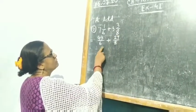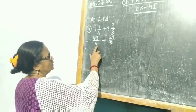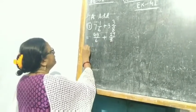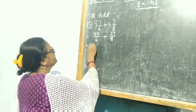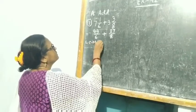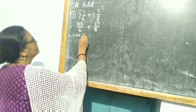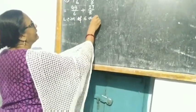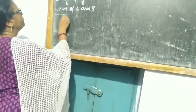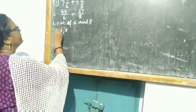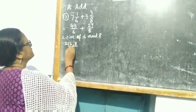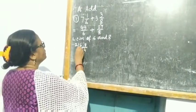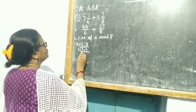Now children, you have to find out the LCM of the denominators 6 and 8. I shall use the repeated division method. First divide them by 2: 6 divided by 2 is 3, and 8 divided by 2 is 4. Next, again divide them by 2.